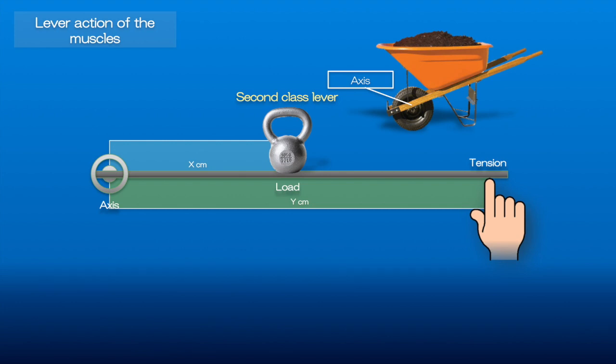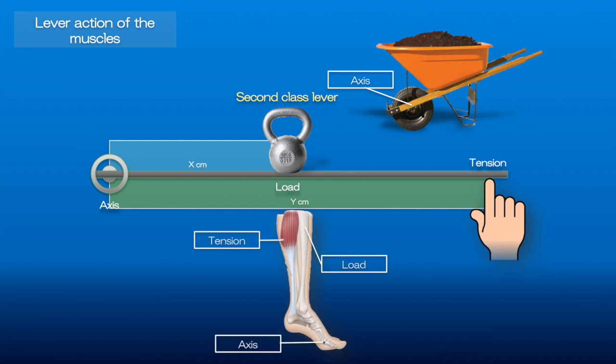In the human body, an example of the second class lever is in the lower leg when you stand on your tiptoes. Here the axis is formed by the metatarsophalangeal joint. The resistance is the whole body weight, and the force is applied to the calcaneus bone or heel by the gastrocnemius and soleus muscle through the Achilles tendon, as you see here.